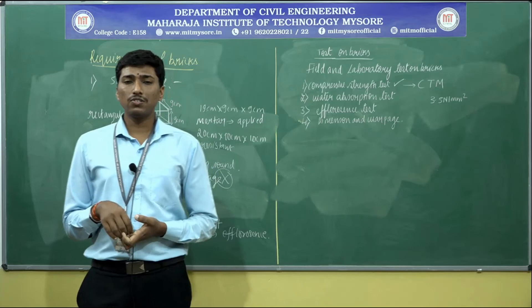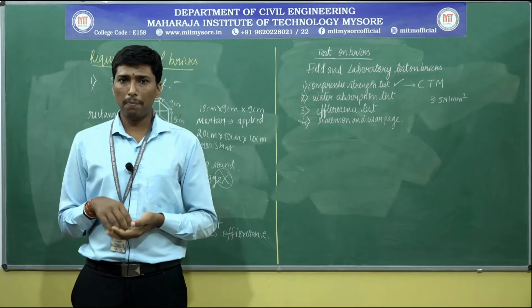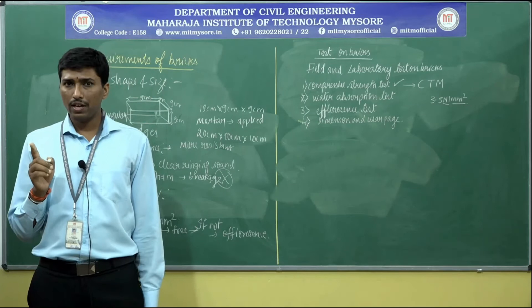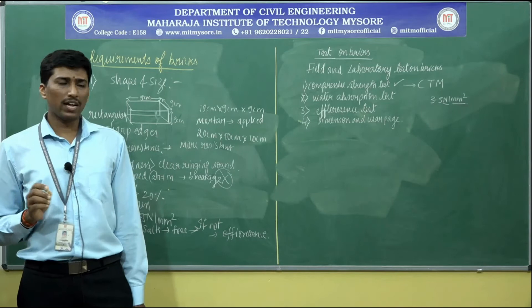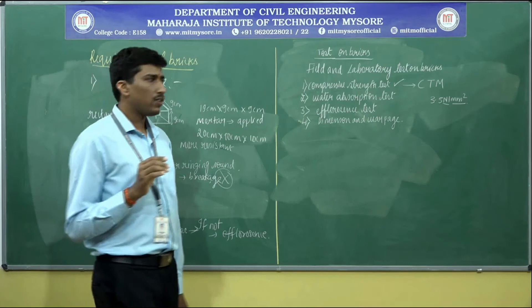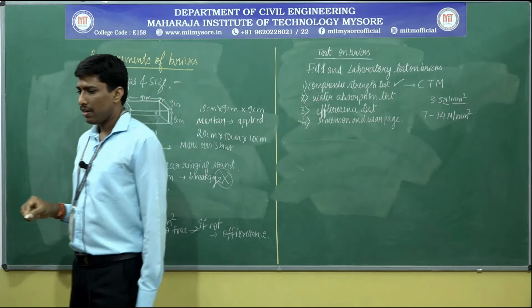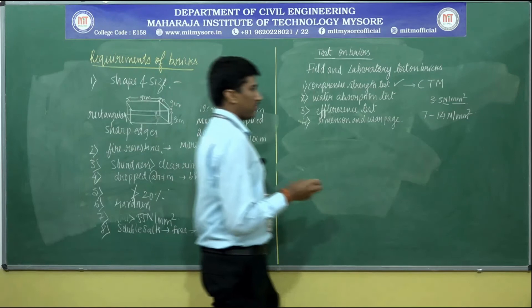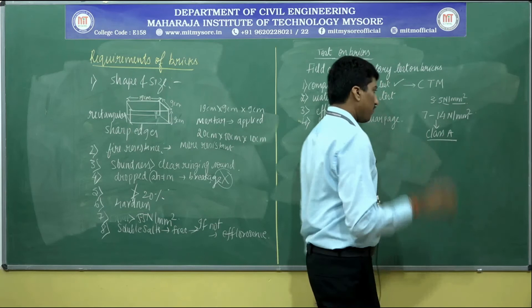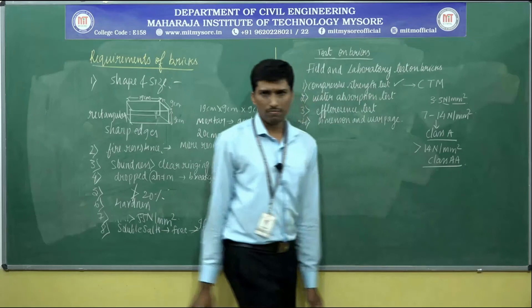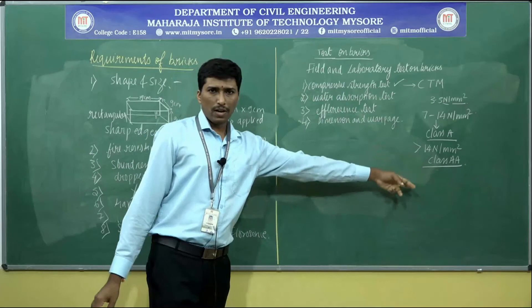Classification by compressive strength: if less than 7 Newton per mm², it is a lower class brick. If in the range of 7 to 14 Newton per mm², it is Class A type. If greater than 14 Newton per mm², it is also classified as Class A type. This is the Indian Standards classification.